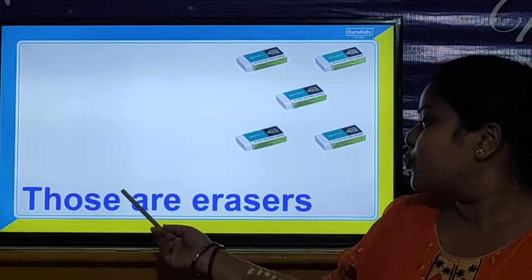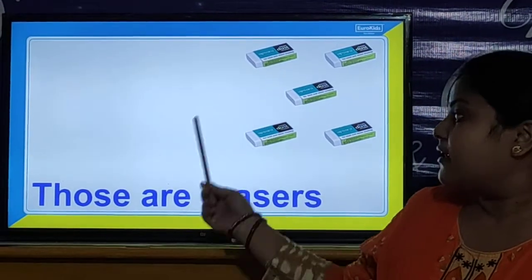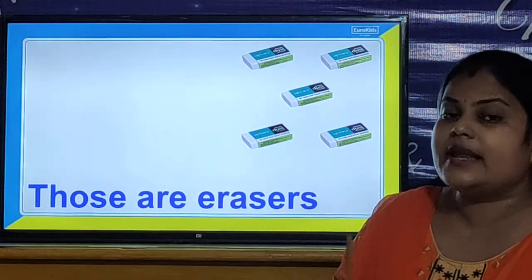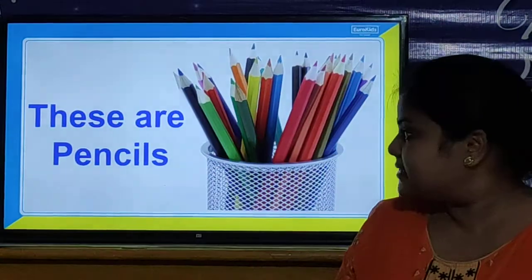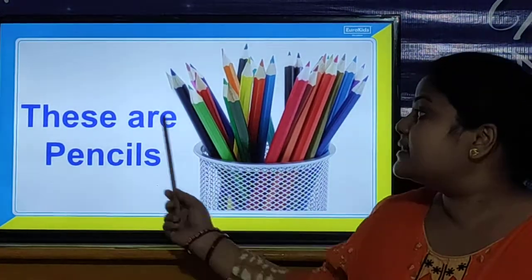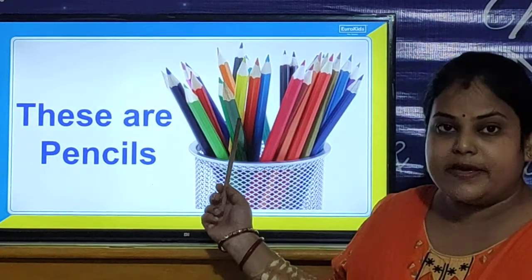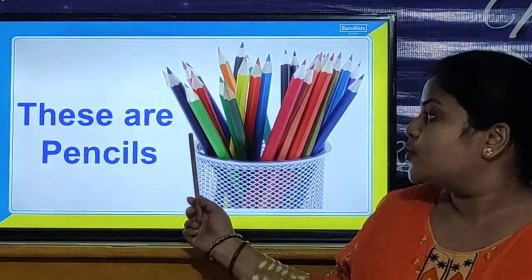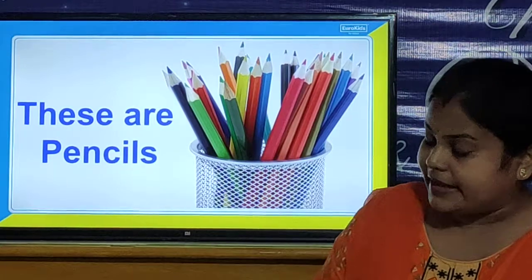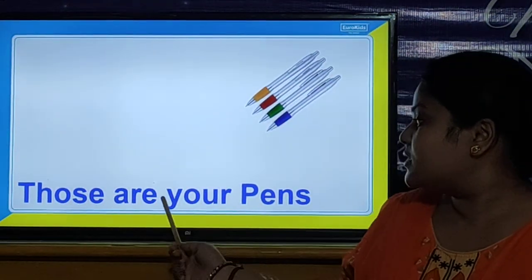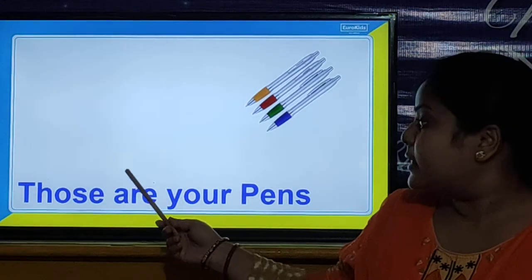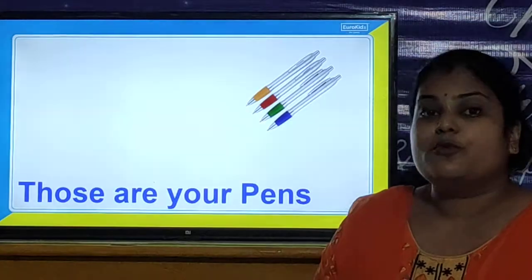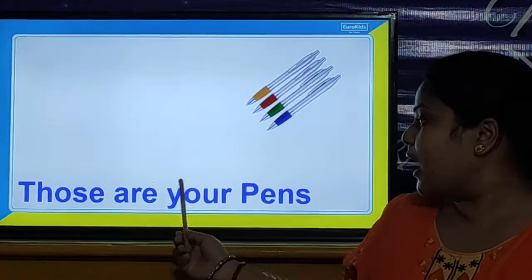Now let us look our next sentence. Our next sentence is: 'Those are erasers.' The erasers are far and there are more than one eraser. Our next sentence is: 'These are pencils.' There are more than one pencil and the pencils are near, so we will use 'these are pencils.' Our next sentence is: 'Those are your pens.' There are more than one pen and the pens are far, so we will use 'those are your pens.'